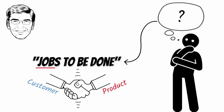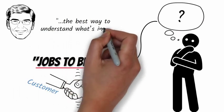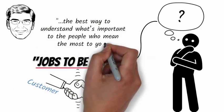Christensen says, thinking about your relationships from the perspective of the job to be done is the best way to understand what's important to the people who mean the most to you.